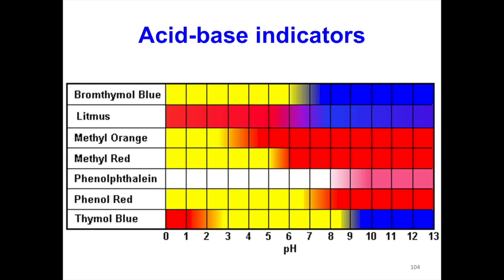For example, bromothymol blue is yellow in acidic medium, but as the pH increases it will start to change to blue at pH 6, and this change continues to pH 7.6 — that is its pH range. Each indicator has a different pH range.